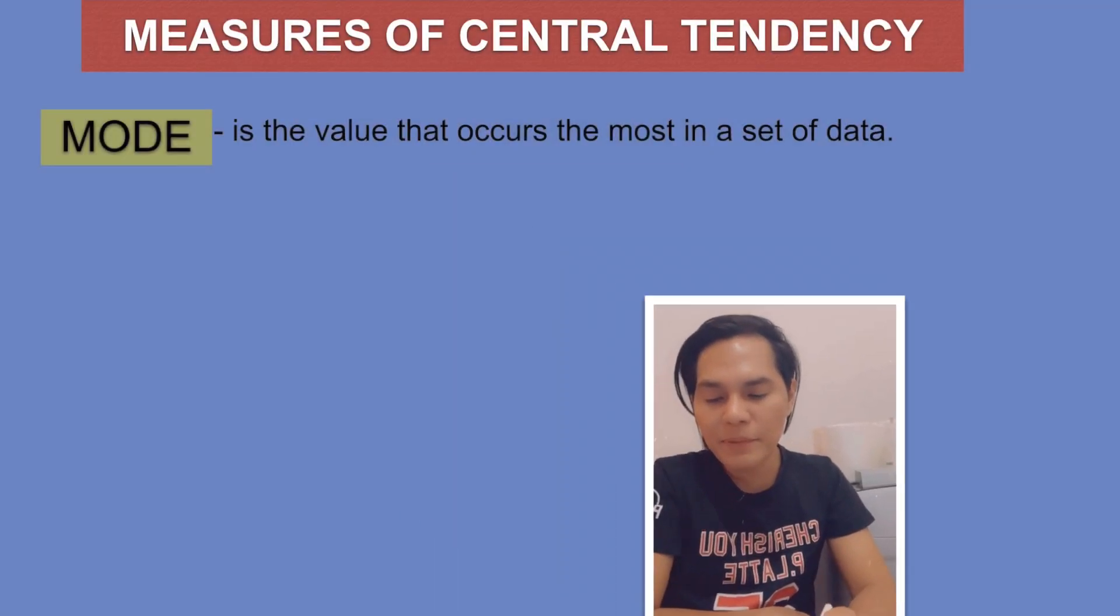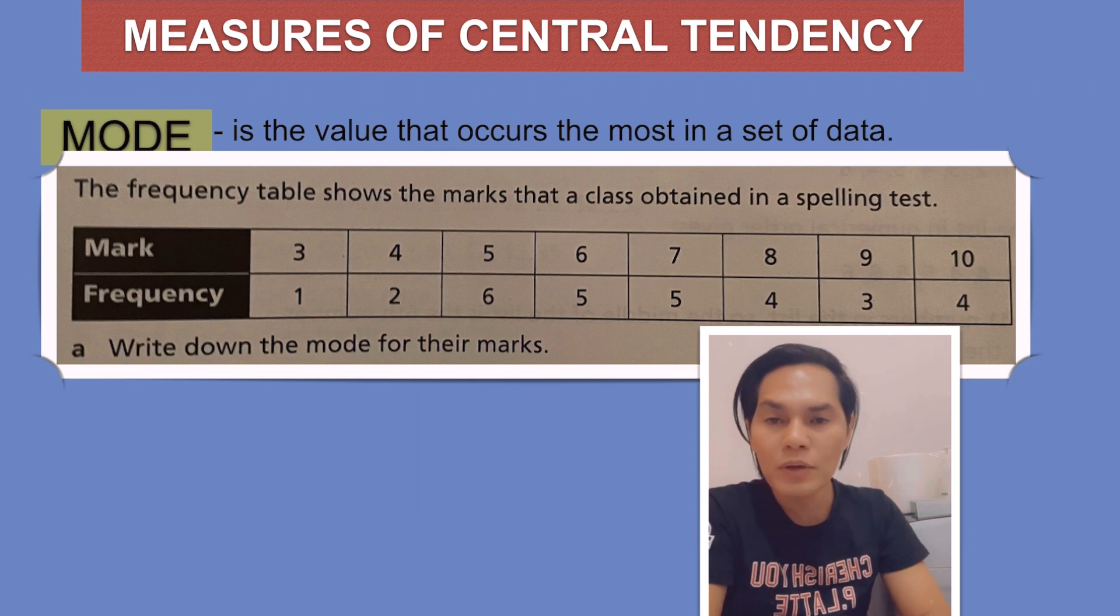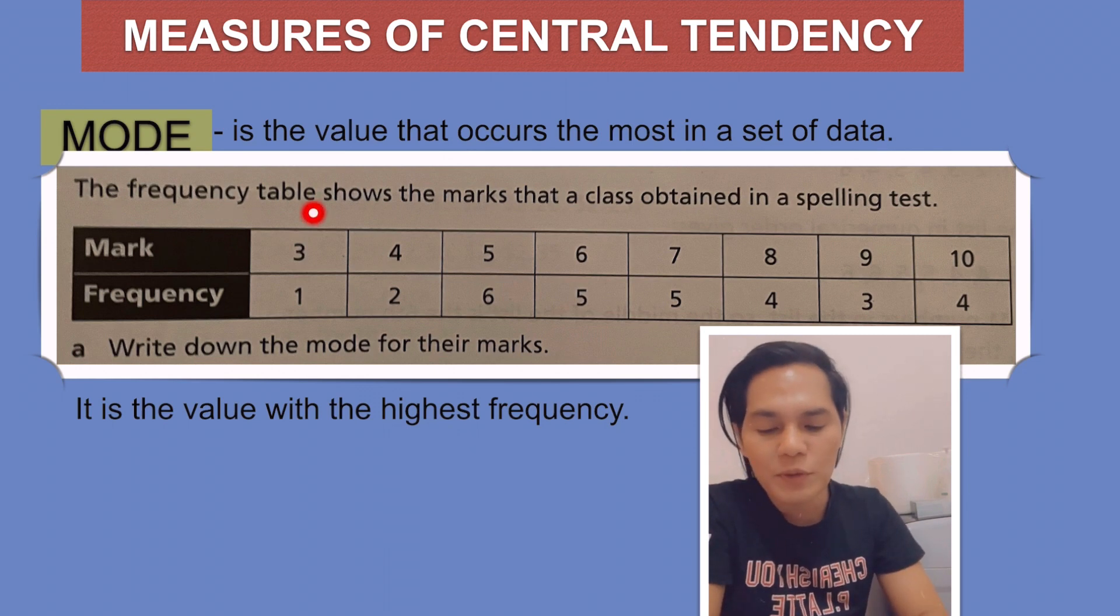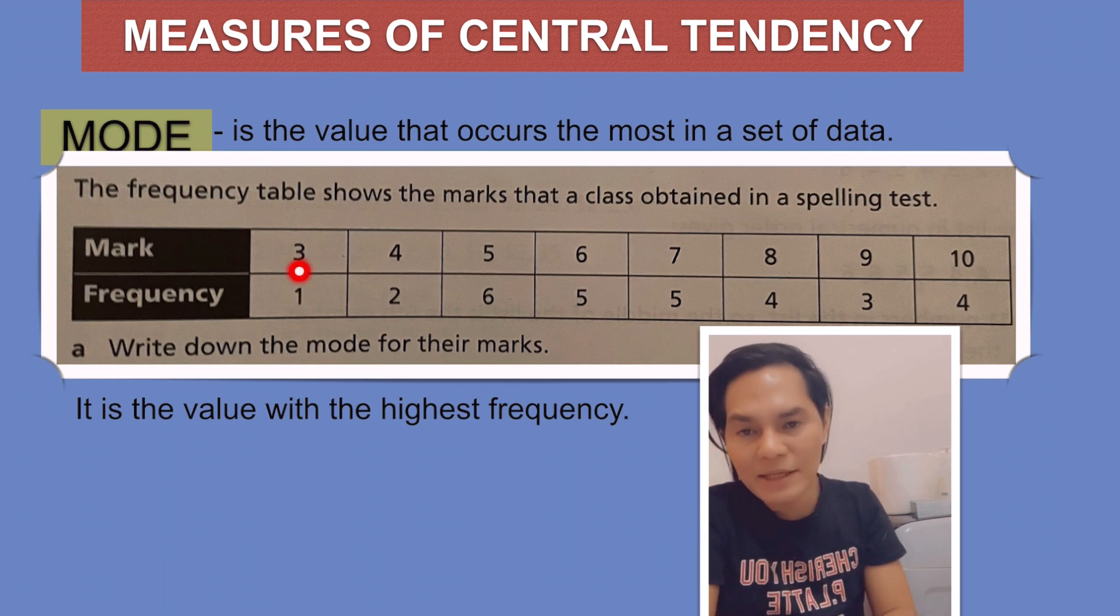I have here another example of the mode given in a frequency table. If this is the case, the mode is just the value with the highest frequency. The frequency table shows the marks that a class obtained in a spelling test. Look at the table - the mark is on top and the frequency below. The frequency tells us there is only one student who got three, two students who got four, six students who got five, and so on. The question is: write down the mode of their marks.